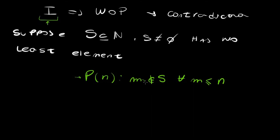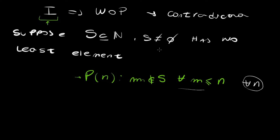For example, taking the number 3 means 1, 2, and 3 do not belong to S. I want to prove this is true for all natural numbers. If true for 100, then all numbers from 1 to 100 would not belong to S. If I can prove this for all natural numbers, then S would be empty, contradicting my hypothesis that S is a non-empty subset of the natural numbers.